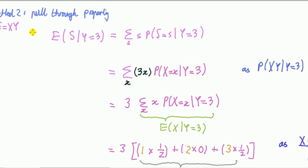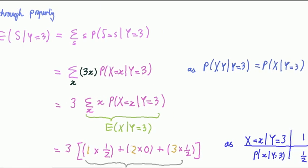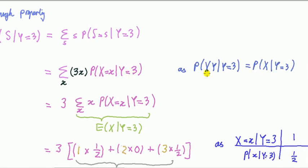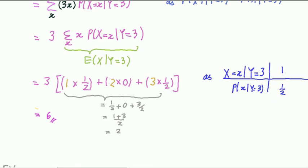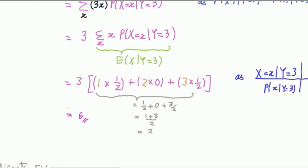Since S equals XY and Y equals three is given, we substitute three for Y, giving S equals 3X. Now Y — being fixed at three — is a constant with respect to what we're summing over, which is X, so we pull it out. The remaining sum is by definition the conditional expectation of X given Y equals three, which we already know. Plugging in: sum of outcome times probability gives six again.